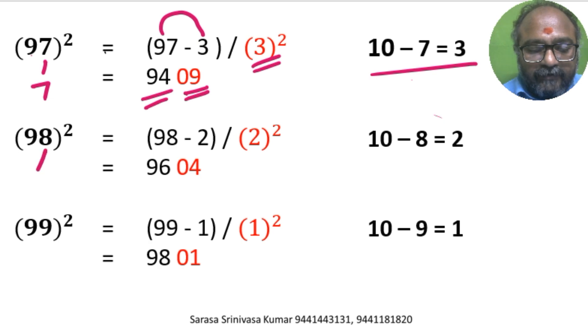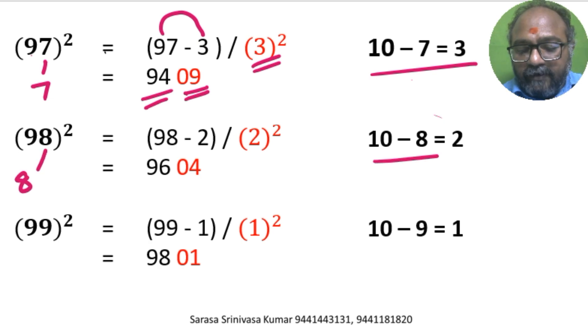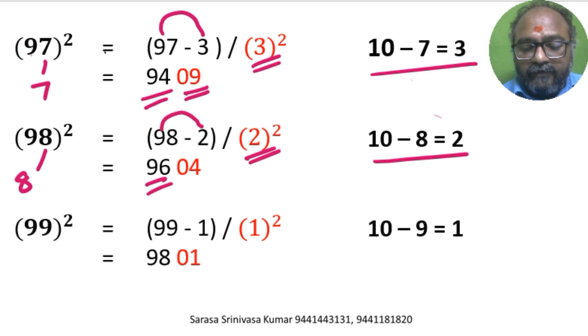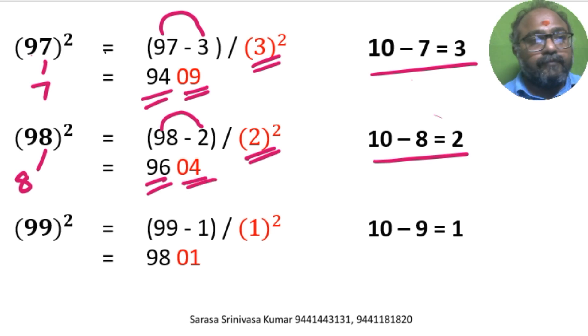98 square. Units digit is 8. 10 minus 8 is 2. 98 minus 2 is 96. 2 square is 4. We write it as 04. So 96, 04 is the answer.